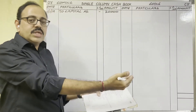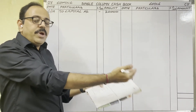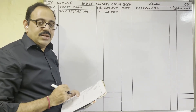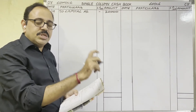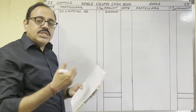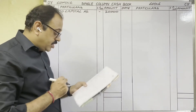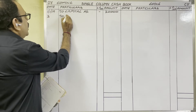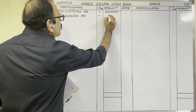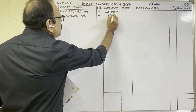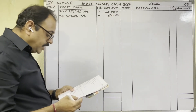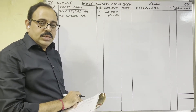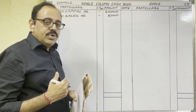3rd January: cash sales 5,000. The firm sold goods to customers and customers paid money, so this is a cash sale because no customer name is given. Cash is coming into the firm, debit side. Write on 3rd date: 'To Sales Account', 5,000 rupees.